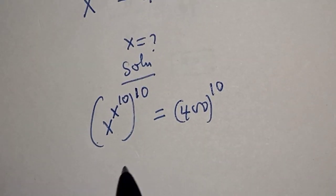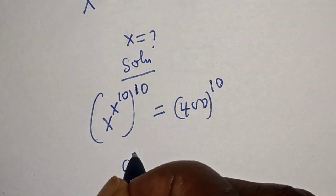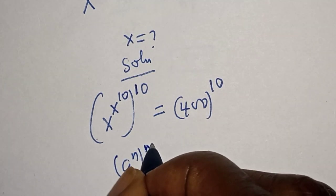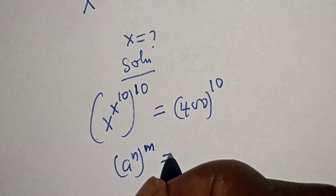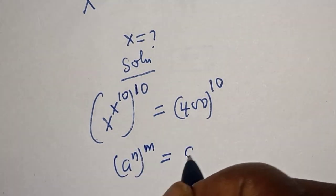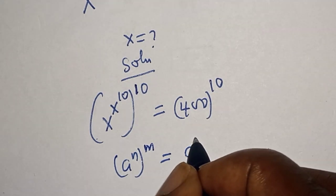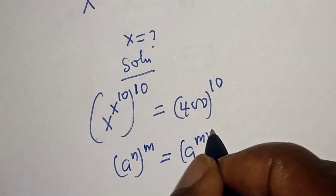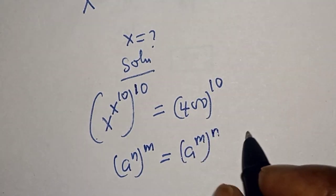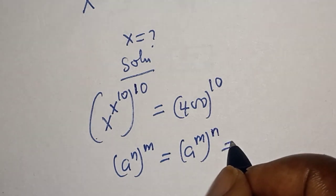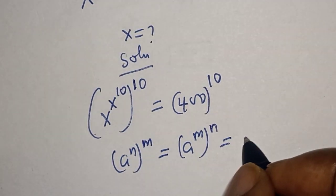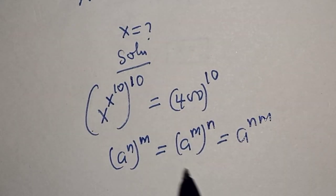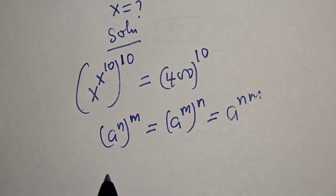Take note of this rule: a raised to power n, to the power of m, is equal to a raised to power m raised to power n, which is equal to a raised to power m times n.